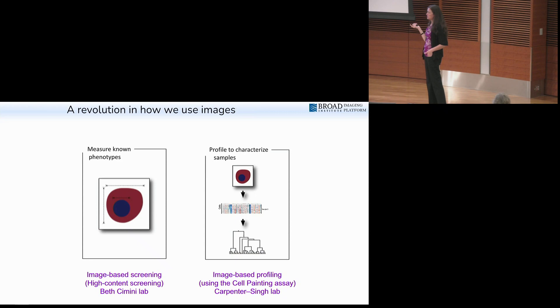That's all I want to talk about measuring known phenotypes. I want to talk about today a revolution in how images are being used. The examples I showed so far, biologists came to us and said, I'm studying this disorder and I really want to count this or measure that. That field is called image-based screening or high-content screening. That work has been taken over by Beth Cimini. The Carpenter Singh Lab is now working primarily on image-based profiling.